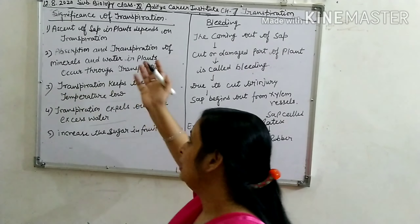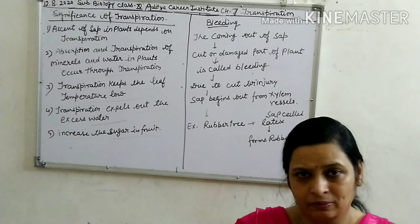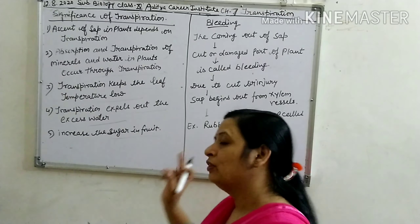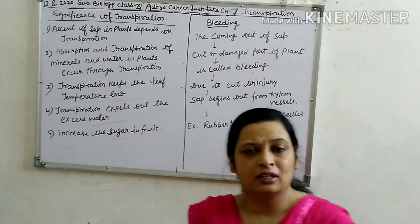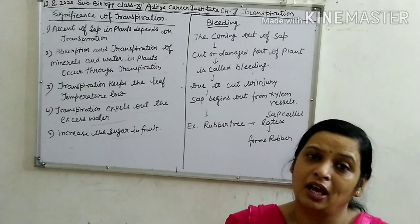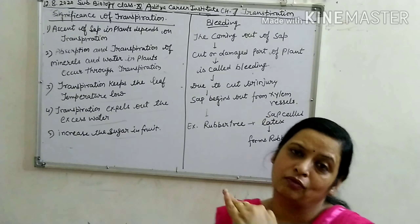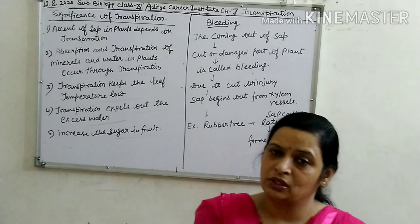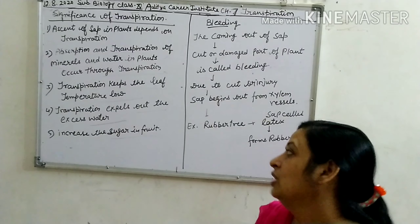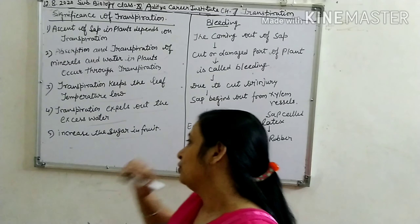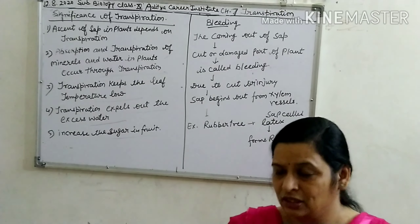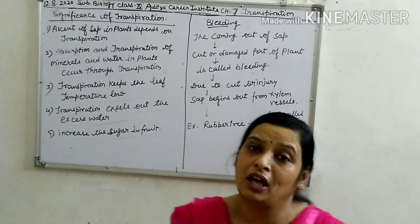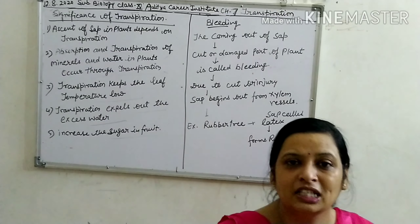So the main points are: ascent of sap depends on transpiration; temperature of leaves depends on transpiration; absorption of water and minerals depends on transpiration; sugar increase in fruits depends on transpiration; and transpiration removes excess water from the plant.